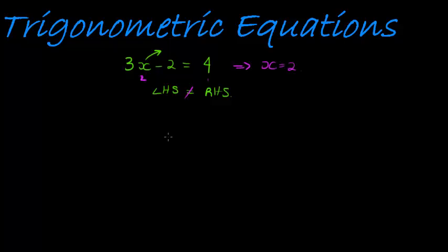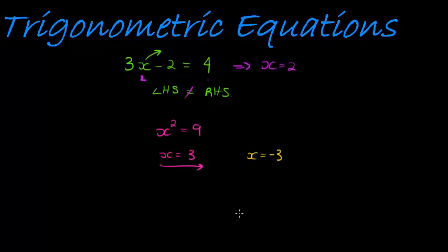We encounter some interesting equations like x squared equals 9. We ask: what value must I square to get 9? You immediately say 3, because 3 squared is 9. But 3 is not the only solution — there's another one. The other answer is negative 3, because negative 3 times negative 3 equals 9. So this equation has two solutions: two values I can substitute so that left-hand side equals right-hand side.